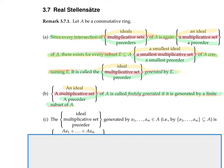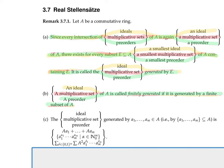The ideal generated by finitely many elements a_1 up to a_m in A is the set of all sums of multiples of the a_i's. This is clearly the smallest ideal containing the a_i's, since it is an ideal and every ideal containing the a_i's must contain this.